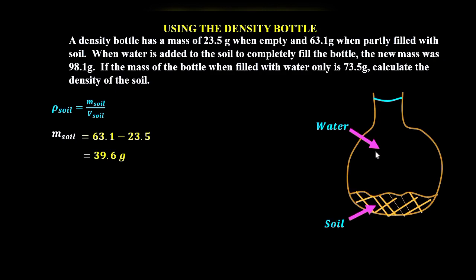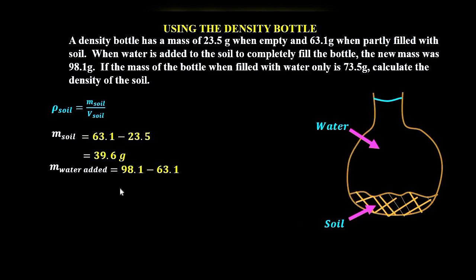First, let us determine the mass of water added. The mass of water added is 98.1 minus 63.1. 98.1 is the mass of the density bottle plus water added plus soil, and 63.1 is the mass of the density bottle and soil. The difference gives us the mass of water added: 35 grams.